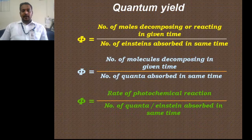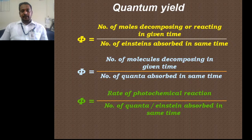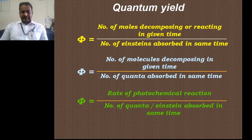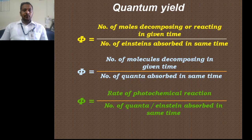Quantum yield, denoted by phi, is expressed as a ratio of the number of moles of reacting substance that reacts in a given time to the number of Einsteins of radiation absorbed in the same time. It can also be expressed as the ratio of number of molecules that decompose to the number of quanta absorbed. Furthermore, phi equals the rate of the photochemical reaction divided by the number of quanta or Einsteins absorbed in the same time.